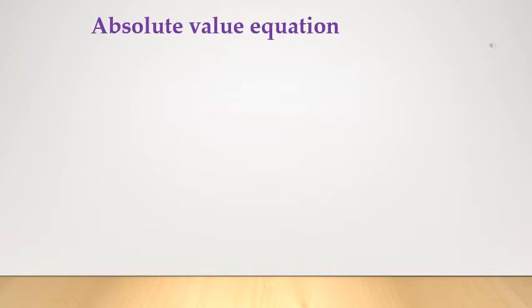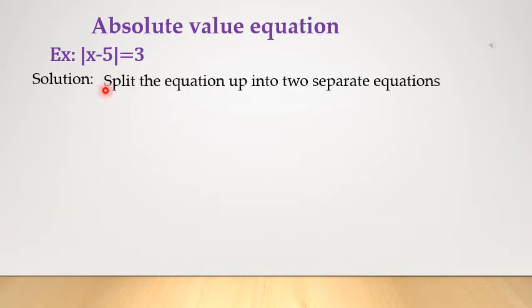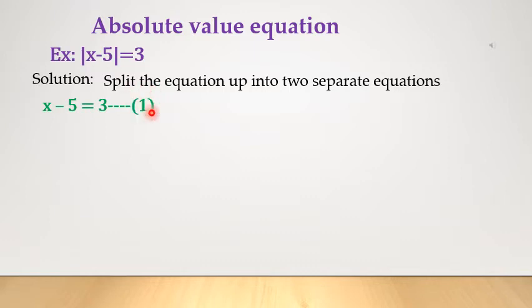Let us see how to solve an absolute value equation. Example: the absolute value of x minus 5 is equal to 3. Solution: split the equation into two separate equations. Equation 1: x minus 5 equals 3. Equation 2: x minus 5 equals minus 3.